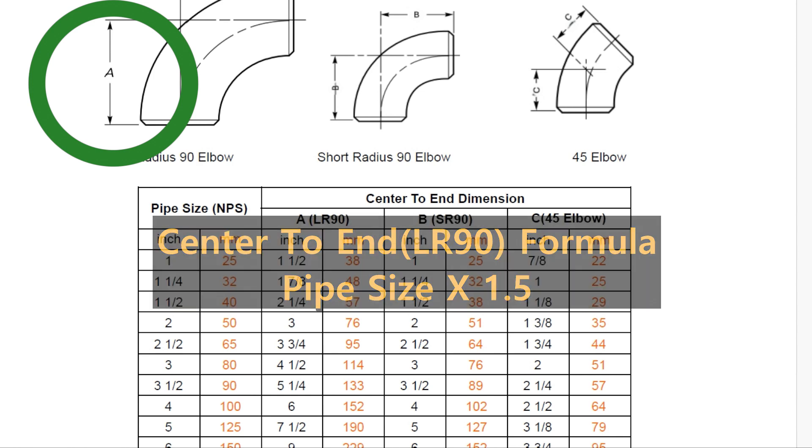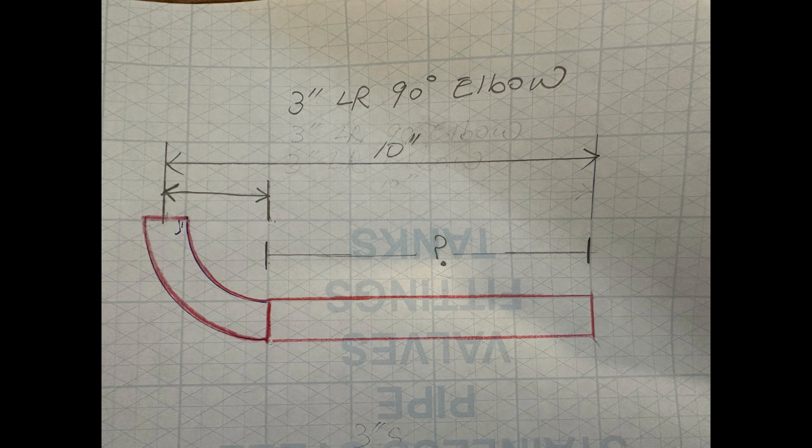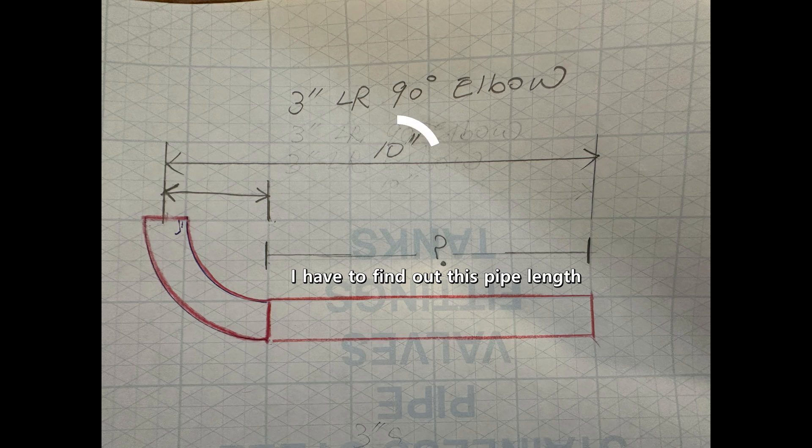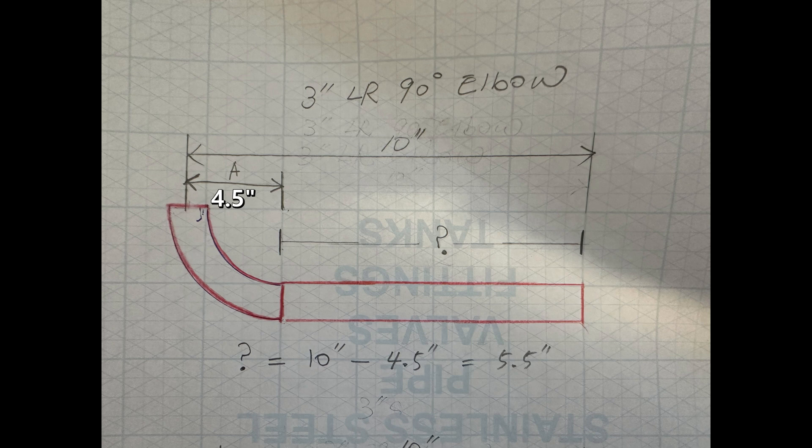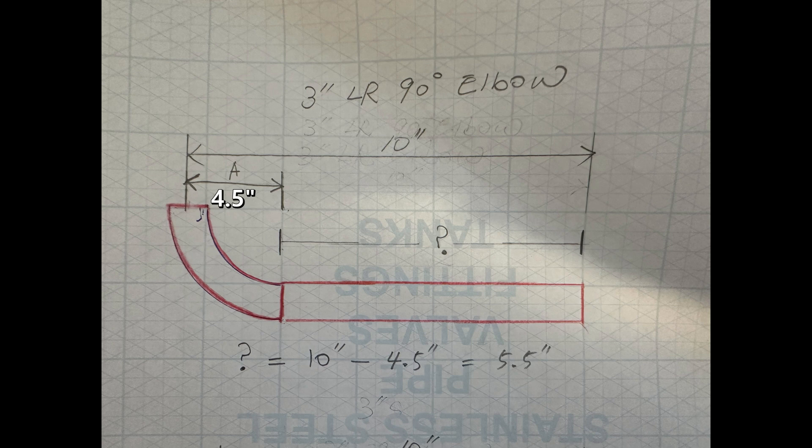I will explain how to use it in practice. Here is a very simple spool with a 3-inch pipe and long radius elbow. You need to figure out the pipe cut size. The pipe spool is 10-inch long. We know the center-to-end of the 3-inch long radius elbow is 4 and a half. Therefore, 10 subtract 4 and a half is 5 and a half. You can make it by cutting the 3-inch pipe to a length of 5 and a half.